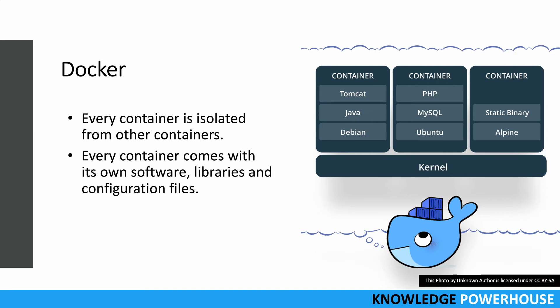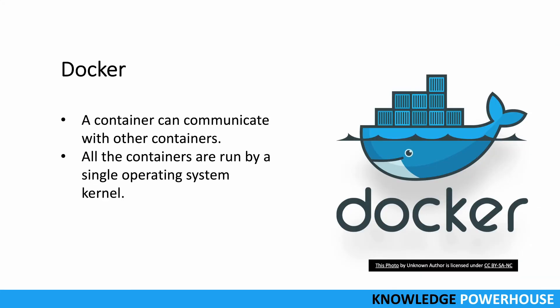Every container in Docker is isolated from other containers. For example, container one might have Tomcat, Java, and Debian, while container two has PHP, MySQL, and Ubuntu — all independent and isolated from each other. Each container comes with its own software, libraries, and configuration specific to that container, so there is no intermixing. On the same machine, you can run multiple containers that can also communicate with each other.